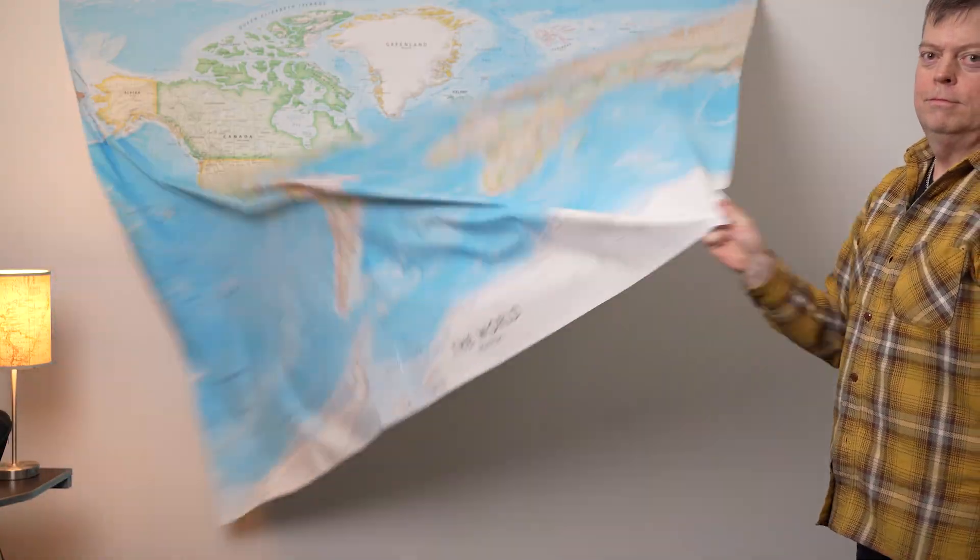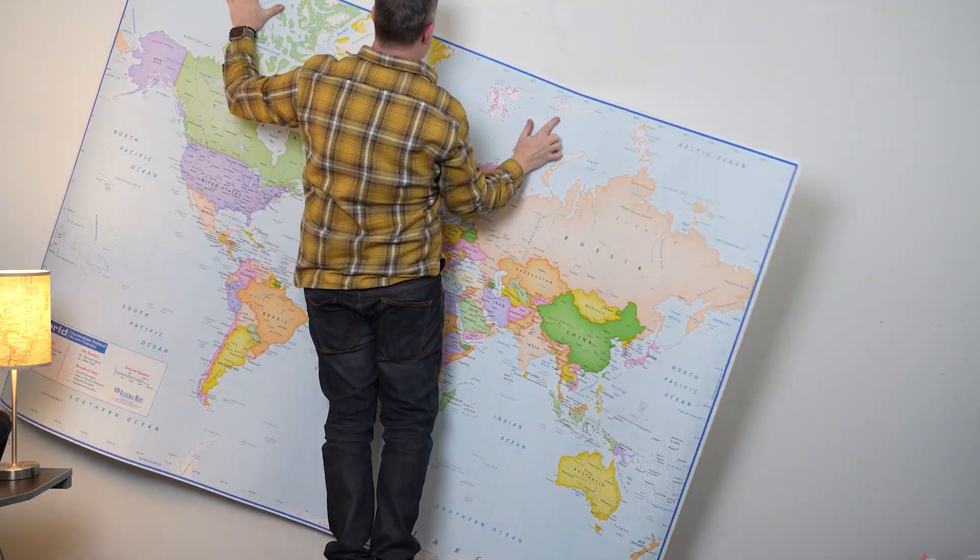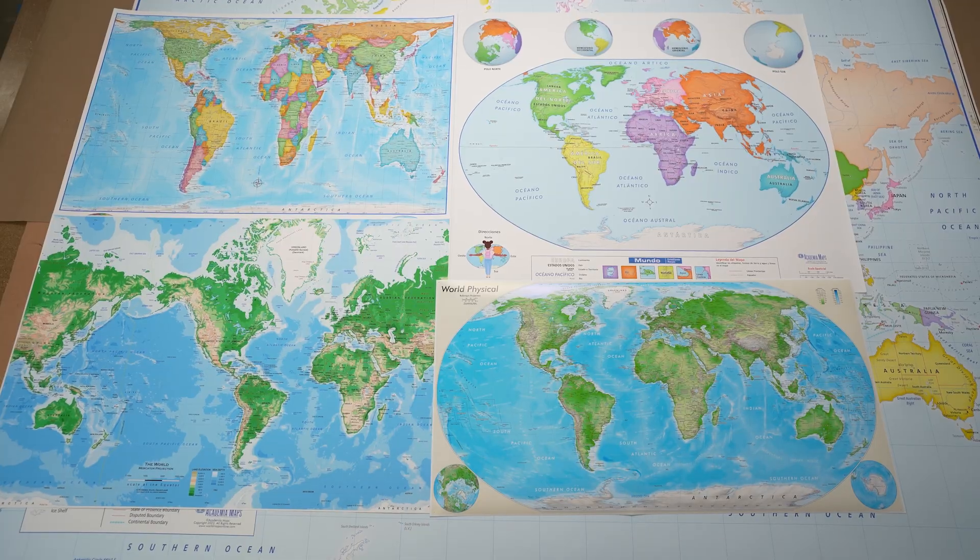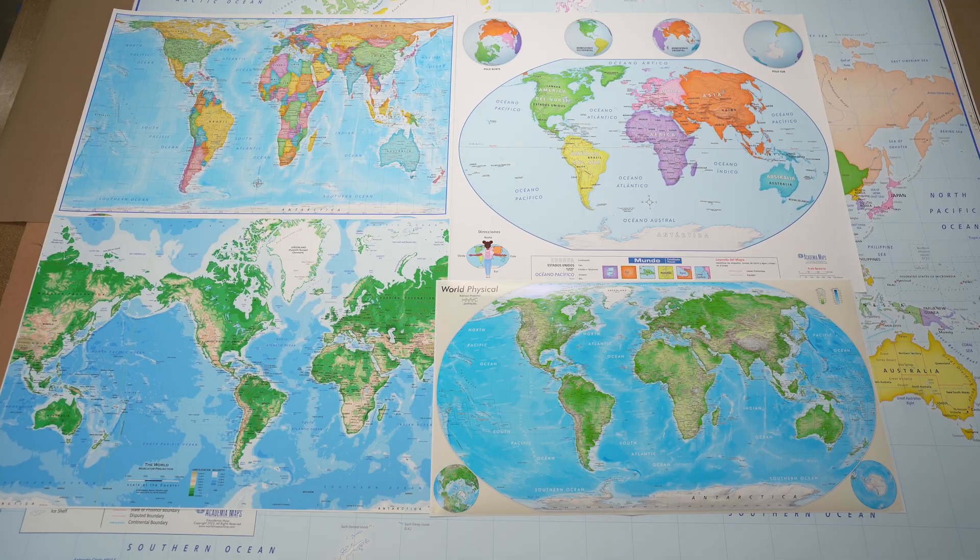And third, practically speaking, Mercator is easy to work with. It's a rectangle, easy to print, easy to hang on the wall, fits nicely in a textbook or a frame. A lot of the alternative projections are ovals or interrupted shapes that are just harder to deal with.